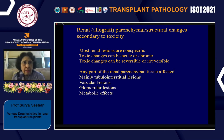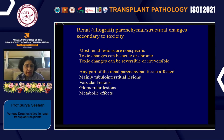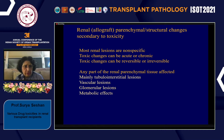Looking at renal parenchymal or structural changes secondary to toxicity, most renal lesions are non-specific — they can be acute or chronic, and reversible or irreversible. Any part of the renal parenchymal tissue can be affected, but tubular and interstitial lesions are most common. In some situations, vascular, glomerular, and metabolic lesions are also seen.